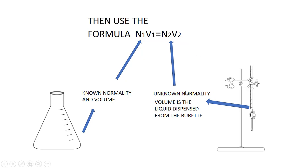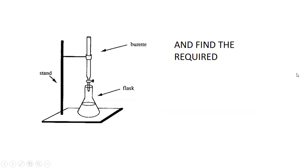N2V2 will be the unknown normality which will be found out, and V2 will be the volume of the liquid dispensed from the burette. From there, you can find the required information, and it's done.